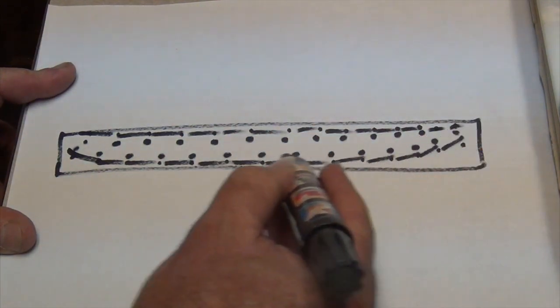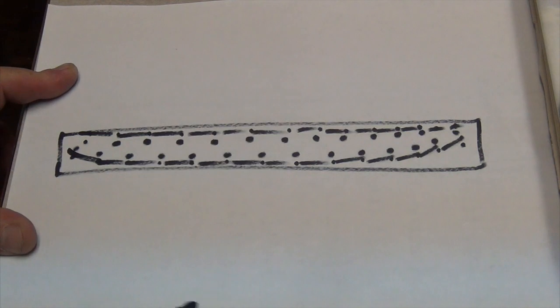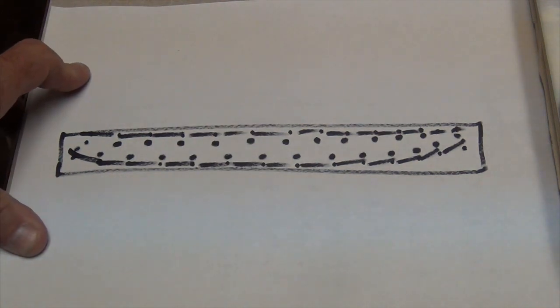Cut this out using either a handsaw or a bandsaw. This is the rough cut stringer that's going to be glued between the EPS blocks to make the blank.